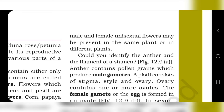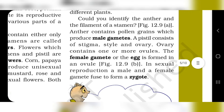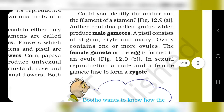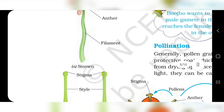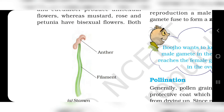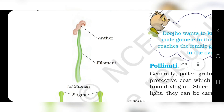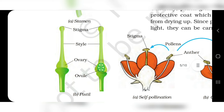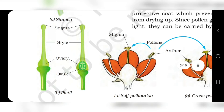The anther contains pollen grains which produce male gametes. The pistil contains stigma, style and ovary. The ovary contains one or more ovules inside it. A female gamete or the egg is formed in the ovule. In sexual reproduction, a male and female gamete fuse to form a zygote. This is shown in the figure of the pistil.